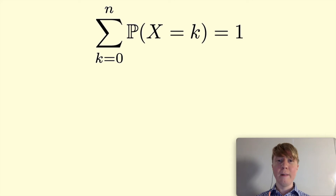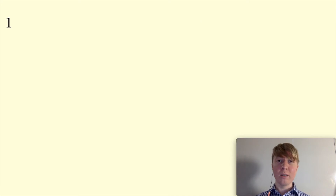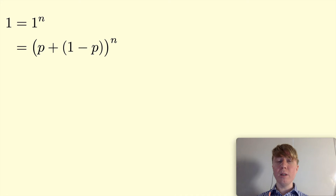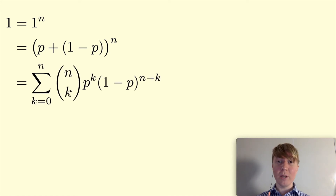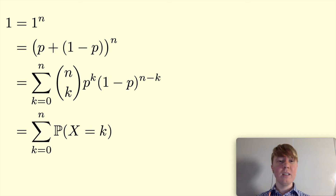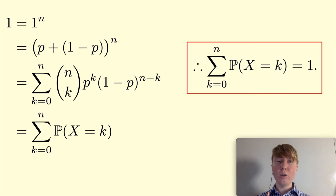Here's something cool you can do with this result: prove that the sum of all binomial probabilities equals 1. Start with 1, which equals 1 to the power n. Rewrite 1 as p plus (1-p), so we have (p + (1-p)) to the power n. Expanding this as a binomial expansion, each term n choose k times p to the k times (1-p) to the n minus k is just P(X = k). So the sum of all binomial probabilities is indeed equal to 1 — a really elegant, short proof.